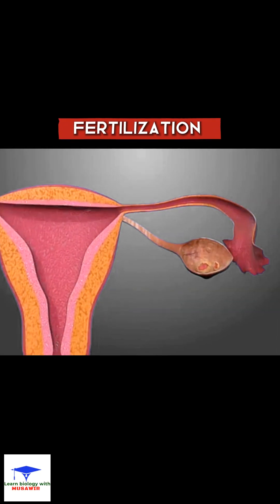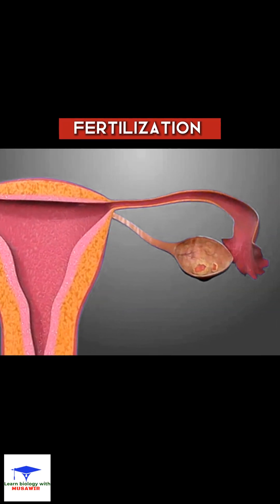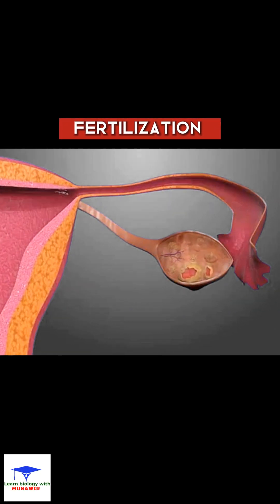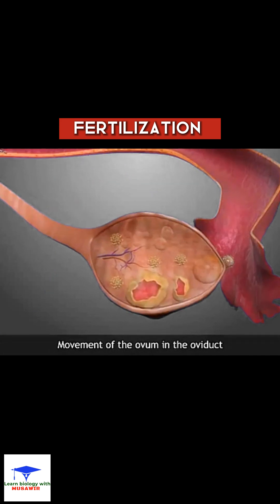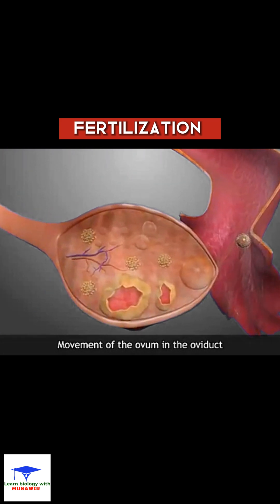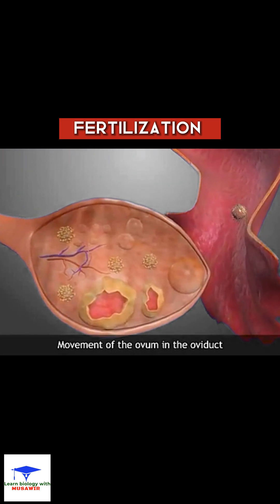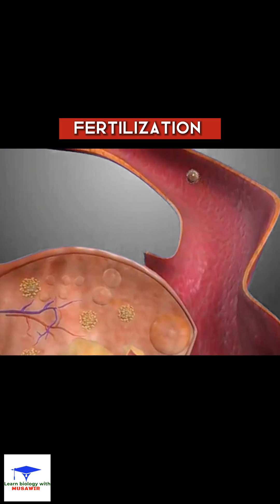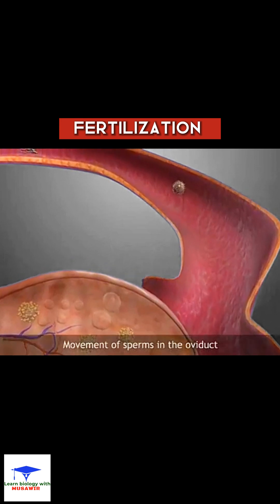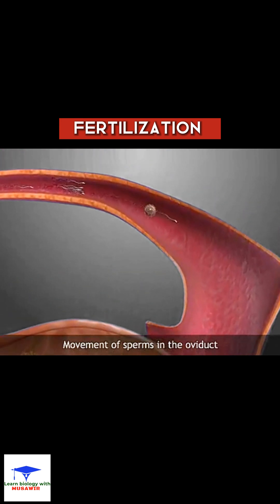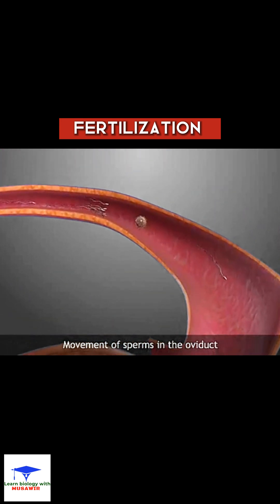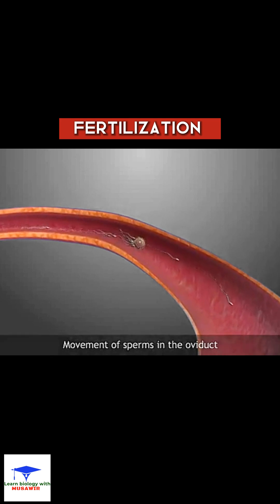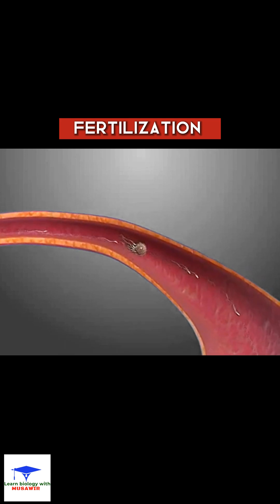The egg matures in the ovary and is released from the Graafian follicle. The egg is released from the ovary and moves into the oviduct. During copulation, the sperms are ejaculated into the female reproductive system. These sperms reach the ovum in the oviduct.